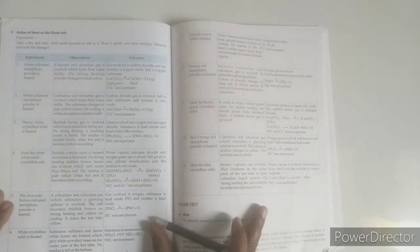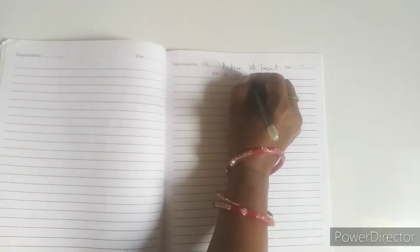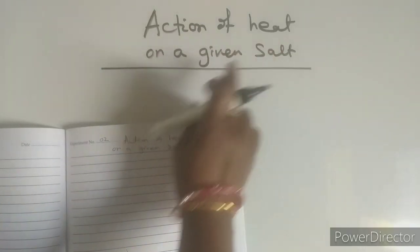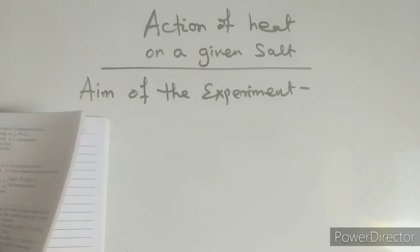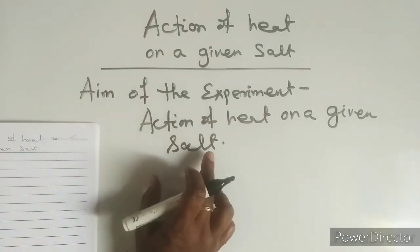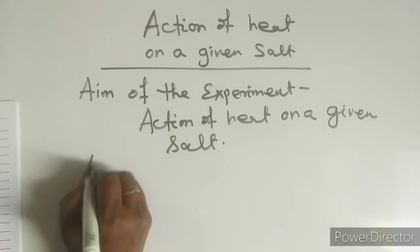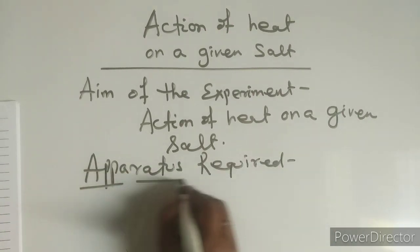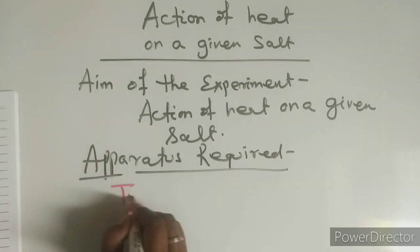After each experiment — not each page, but after each experiment — you mention the experiment number. Experiment number two: as usual, put the date. The heading is: Action of Heat on a Given Salt. In the aim, write to study the action of heat on a given salt. Then list apparatus required for this experiment.